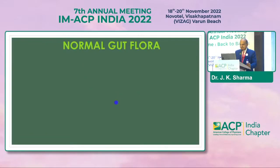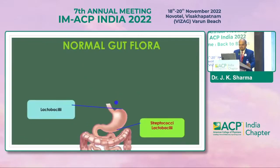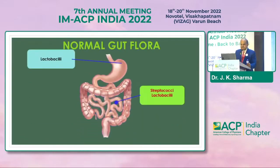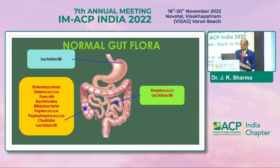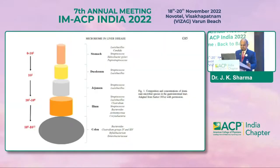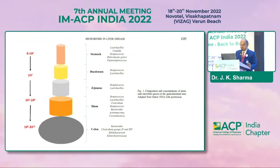The normal gut flora: in the stomach they are lactobacilli; in the large intestine they are Enterobacteriaceae, Enterococcus faecalis, Bacteroides, Bifidobacteria, Peptococcus, Peptostreptococcus, Clostridia, and Lactobacilli; and in the small intestine they are Streptococci and Lactobacilli.